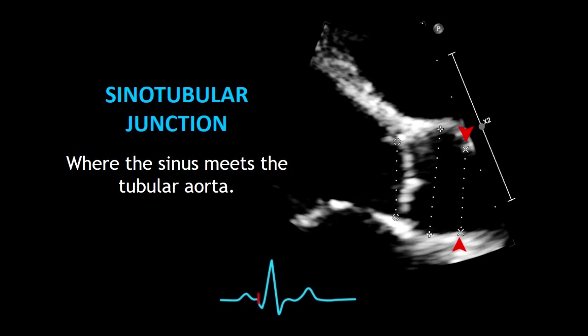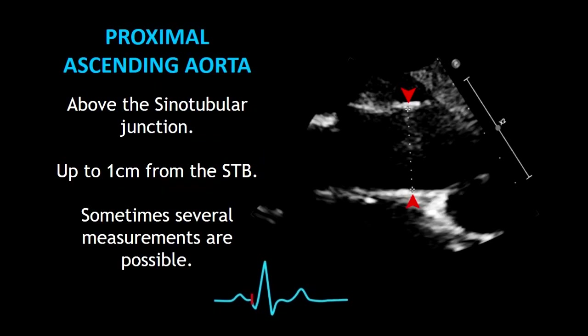You can also measure the sinotubular junction diameter, which is exactly the point where the sinus meets the tubular aorta. And finally, you can measure the proximal ascending aorta diameter, which is approximately 1 cm from the sinotubular junction. Sometimes you will need to obtain a modified view to properly observe the ascending aorta.